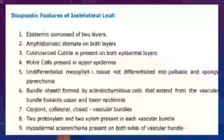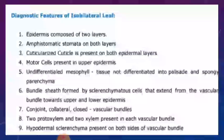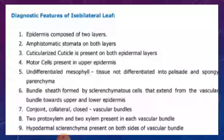The first diagnostic feature of the isobilateral leaf concerns the epidermis. It is composed of two layers — a single-layered or uniseriate epidermis occurs on both sides of the leaf. The epidermal cells are compactly arranged, oval or rectangular, transparent parenchyma cells.